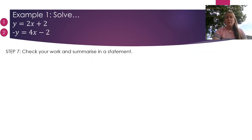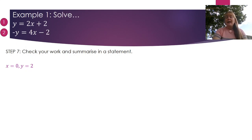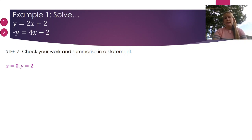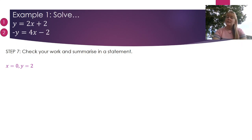The final step is to check your work by substituting x = 0 and y = 2 into both equations. If the answers are correct for both, you know you've made the right choices. Then summarize your answer in a statement at the end — this brings x and y together clearly for your teacher to read your final answer. That completes our first example using addition.